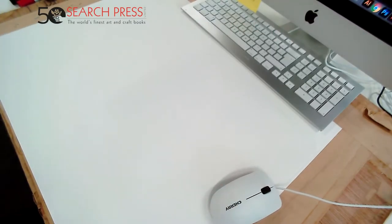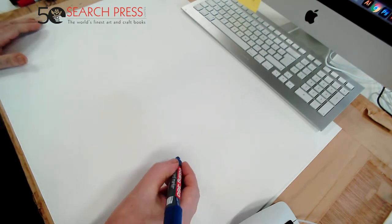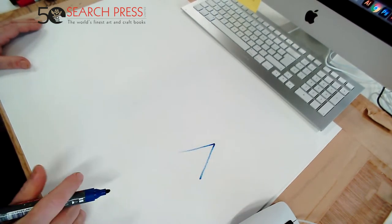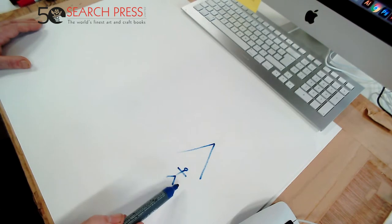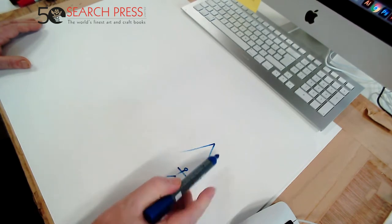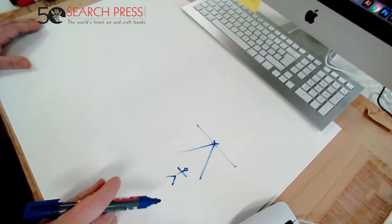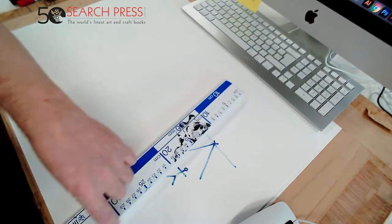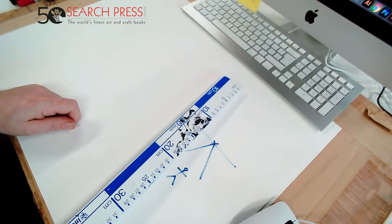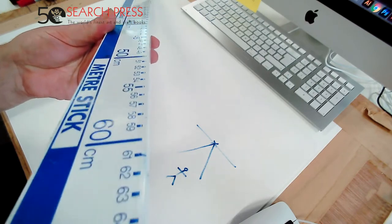We're going to be learning to draw in perspective. If you stand in the middle of a railway track — which I really don't recommend — the last thing you're going to see is the two lines converging to a single vanishing point on the horizon. This is because things that are parallel to each other will converge and get smaller as they go away from you.